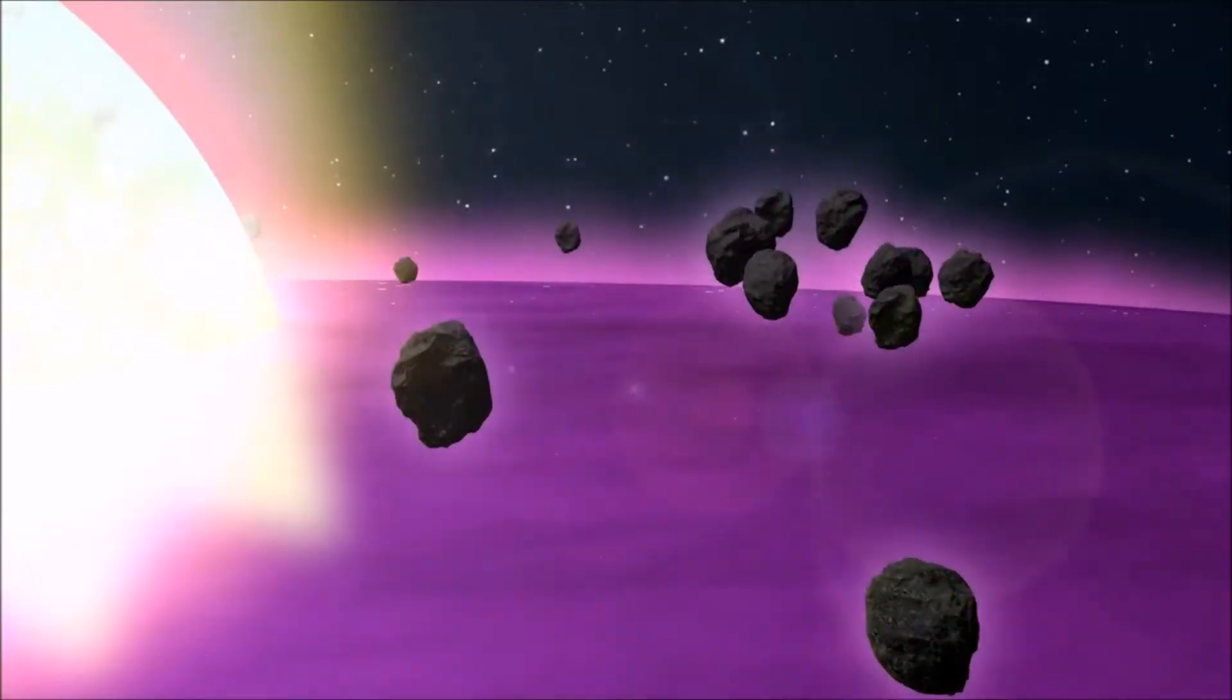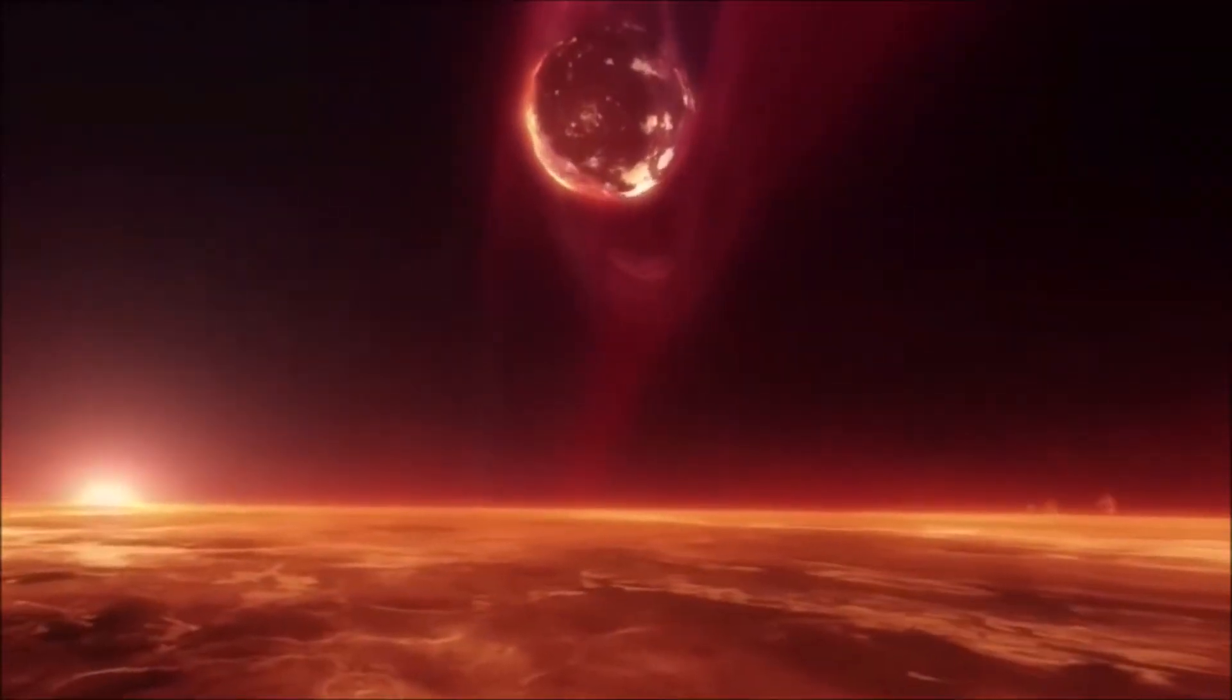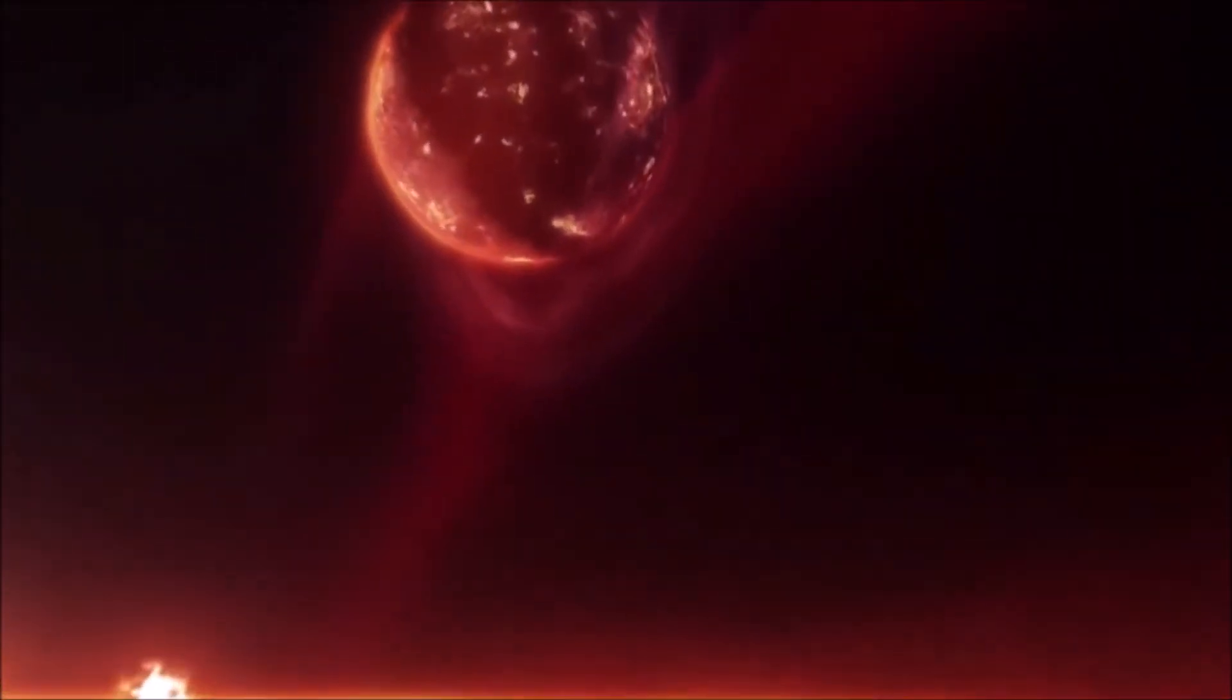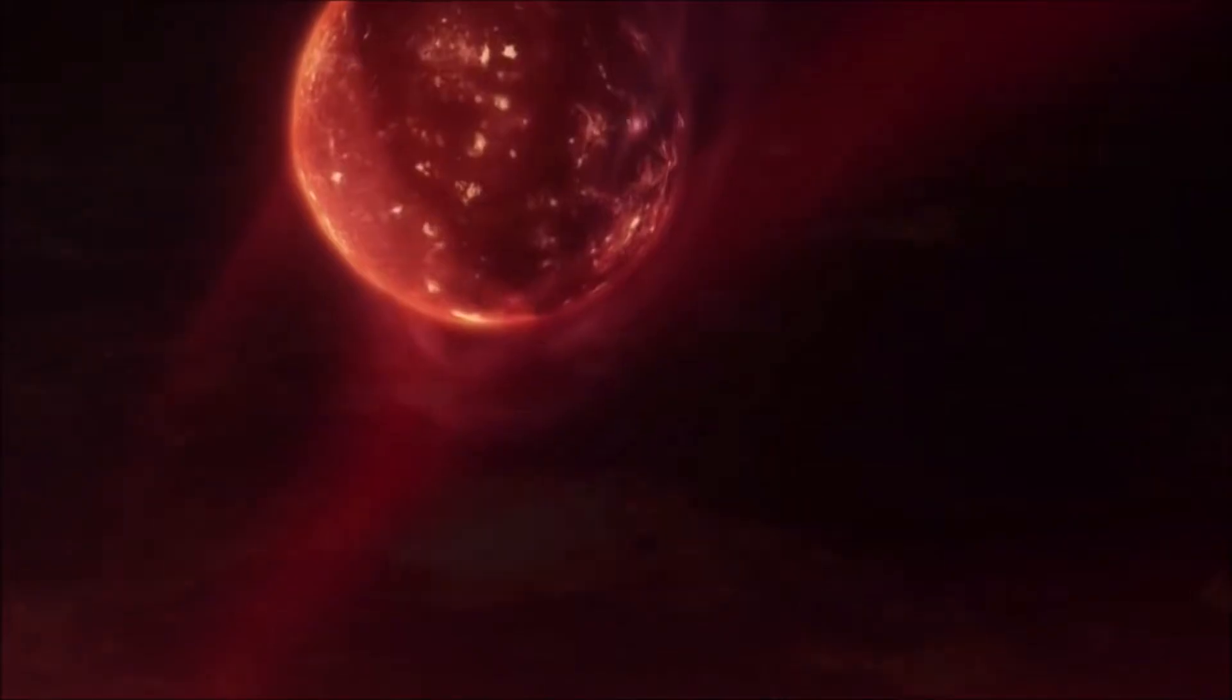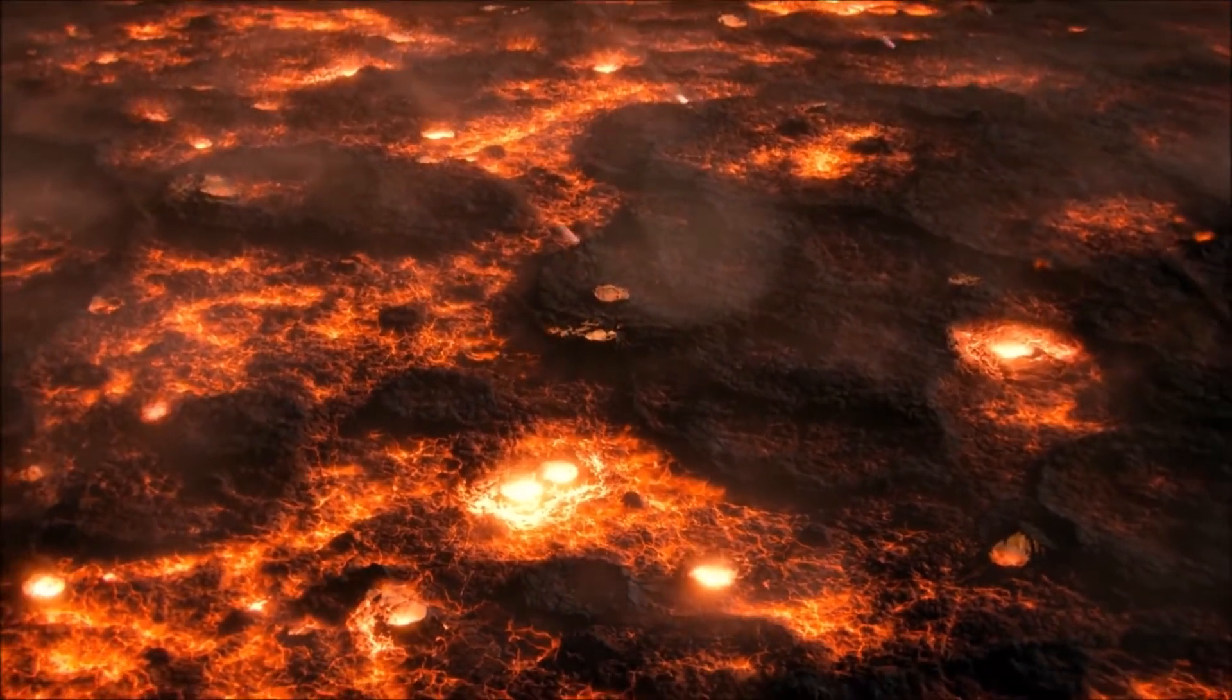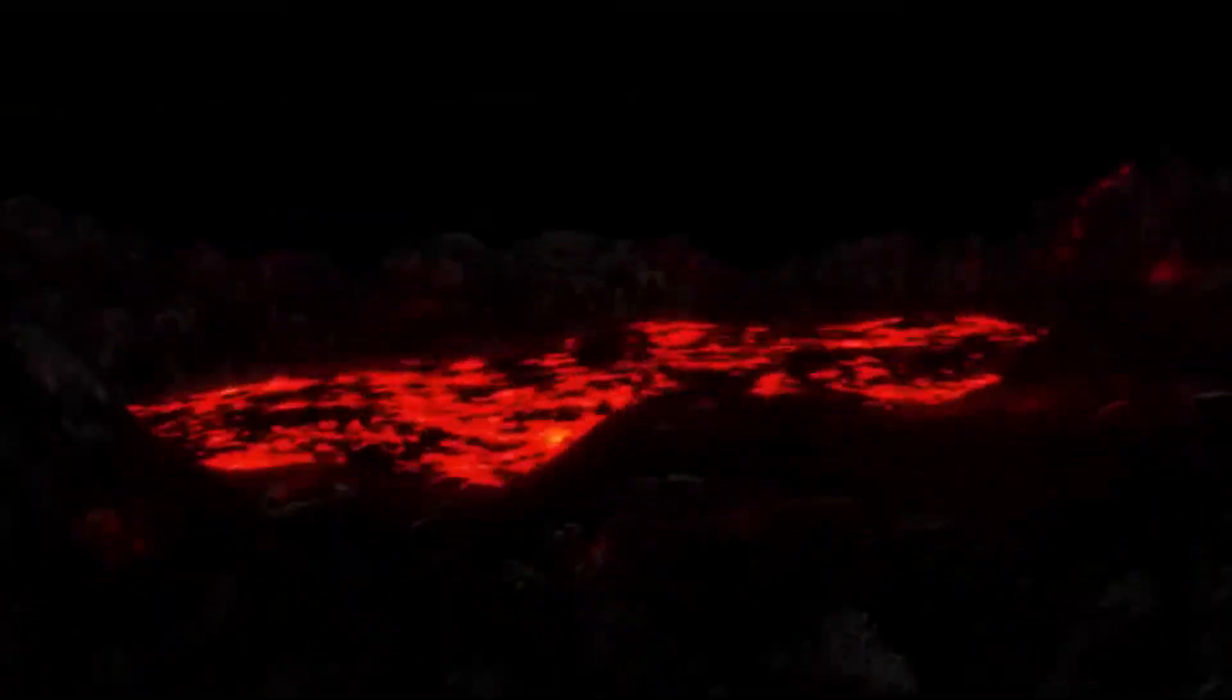As a planetesimal grew larger, its gravitational pull increased. It became more tightly held together, and it drew in rocks from its immediate surroundings with greater force, leading to a period of intense bombardment and growth. Earth, and the three other rocky planets of the inner solar system, were formed in this way about 4.56 billion years ago.